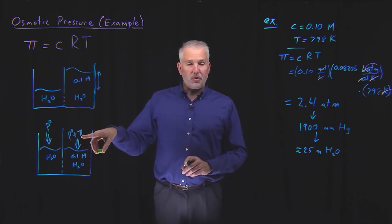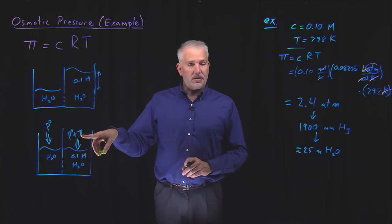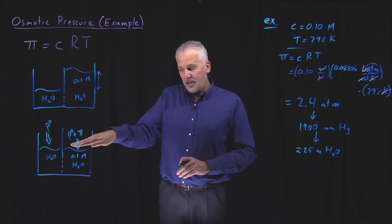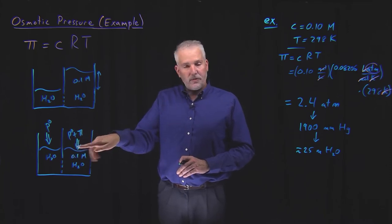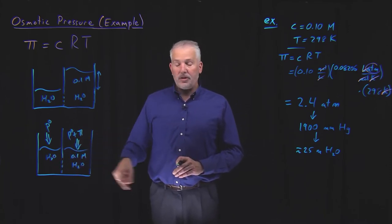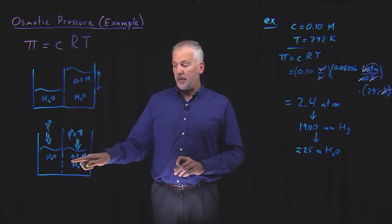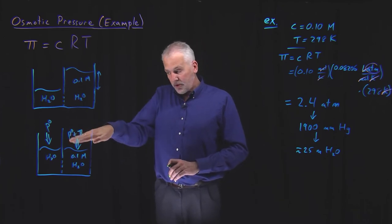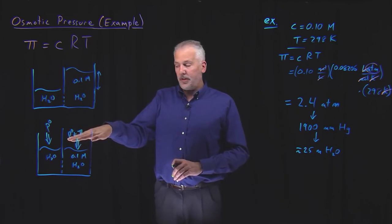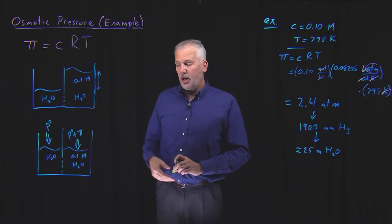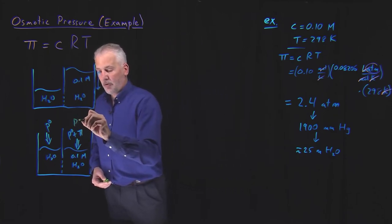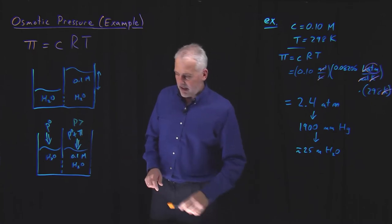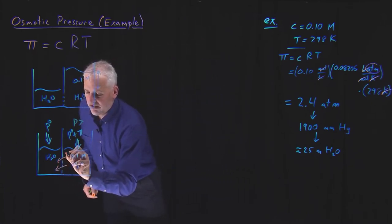But what if I push with a pressure greater than p-naught plus the osmotic pressure? If I push not with 2.4 atmospheres, but with 2.5 or 3 atmospheres, I can actually cause solvent to flow the other way. That's contrary to the direction thermodynamics tells us it will spontaneously flow, so I have to provide energy for that to happen. That's why I have to exert so much pressure, more than 2.5 atmospheres, to cause that to happen.